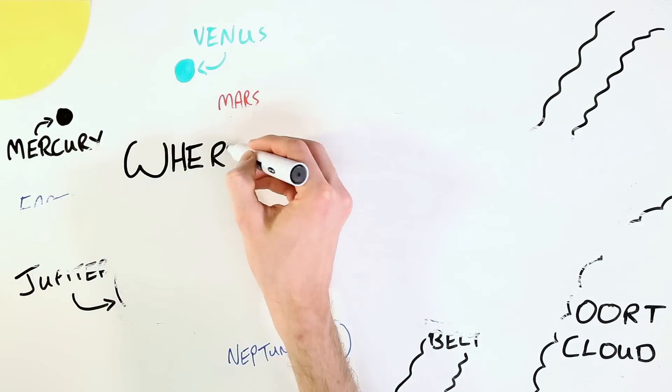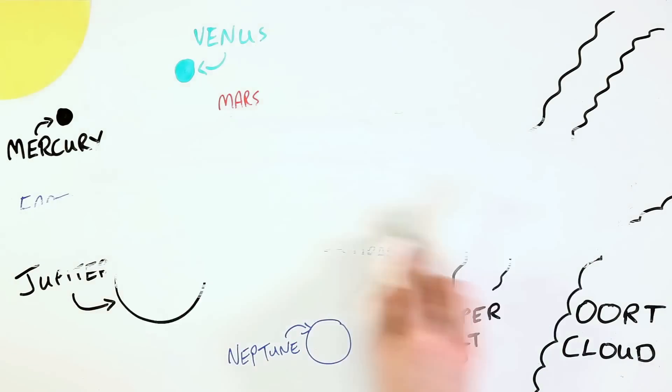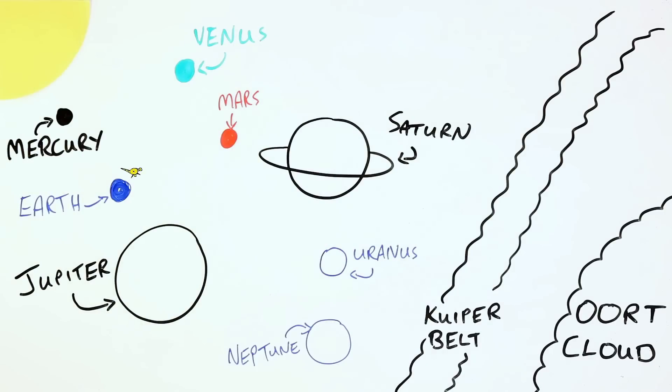This begs the question, where does the solar system end? We are starting to get answers to this question, as a space probe launched in the 1970s travels further than anything has gone before.